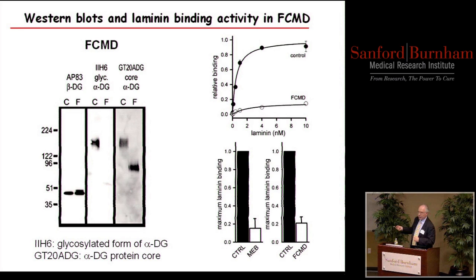We knew this glycosylation was important for function. Looking at laminin binding, control muscle shows very high affinity binding to alpha-dystroglycan, whereas binding to a patient biopsy — FCMD — is dramatically reduced. Both for muscle-eye-brain disease and for all the other dystrophies, the absence of this glycosylation leads to the loss of high affinity laminin binding.